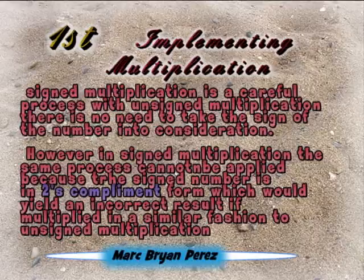Signed multiplication is a careful process. With unsigned multiplication, there is no need to take the sign of the number into consideration. However, in signed multiplication, the same process cannot be applied because the sign number is in 2's complement form, which would yield an incorrect result if multiplied in similar fashion to unsigned multiplication.